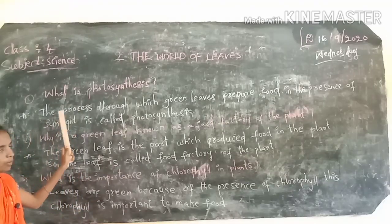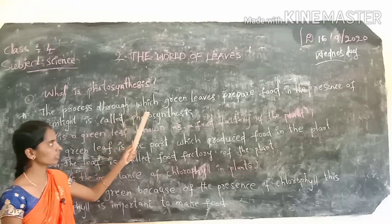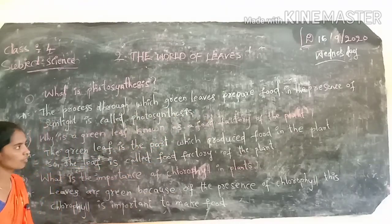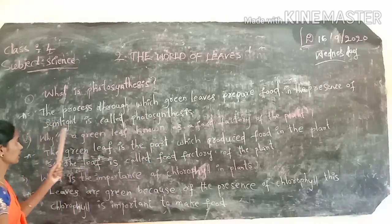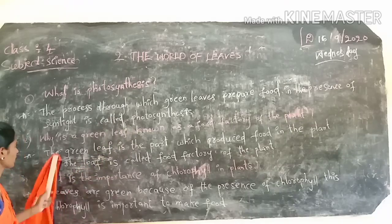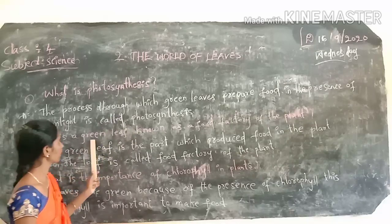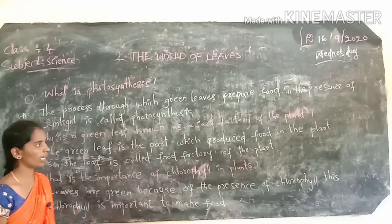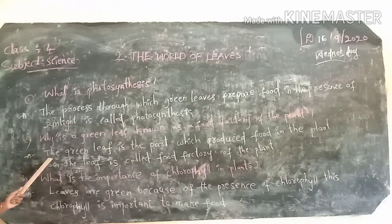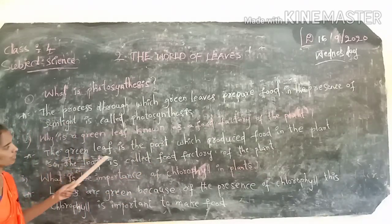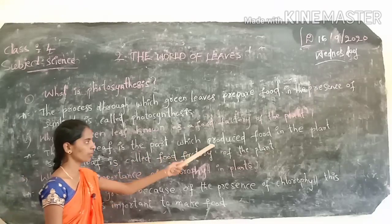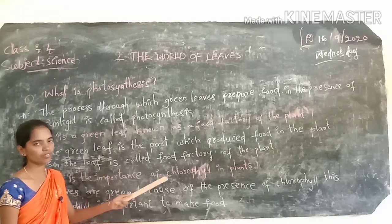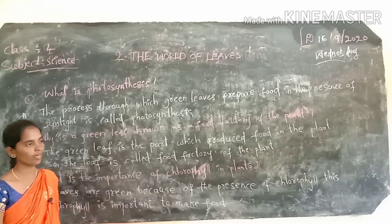What is photosynthesis? The process through which green leaves prepare food in the presence of sunlight is called photosynthesis. Why is a green leaf known as a food factory of the plant? The green leaf is the part which produces food in the plant, so the leaf is called the food factory of the plant.